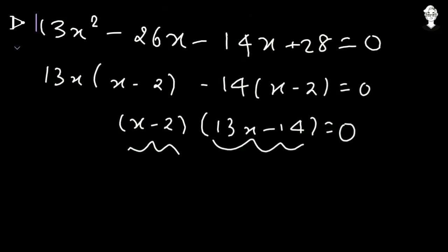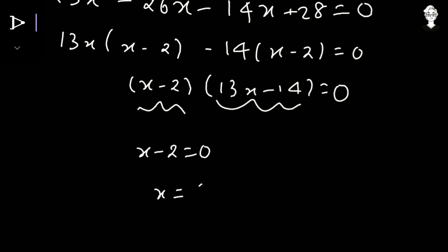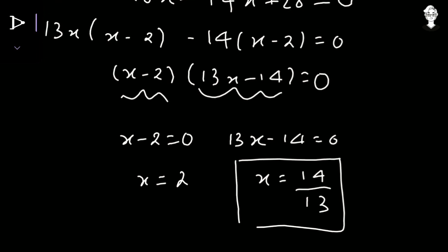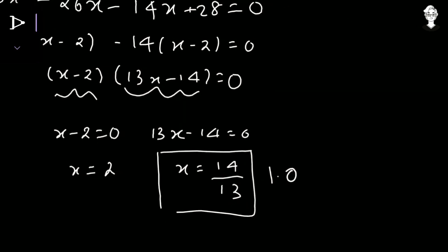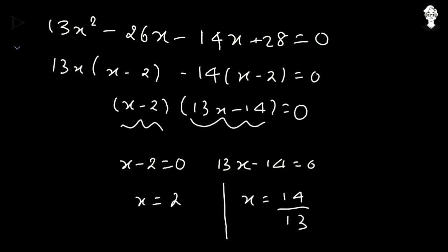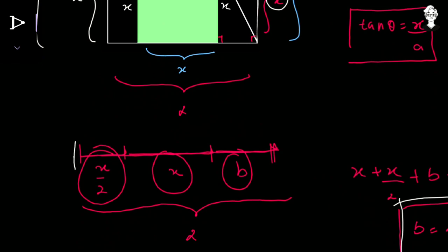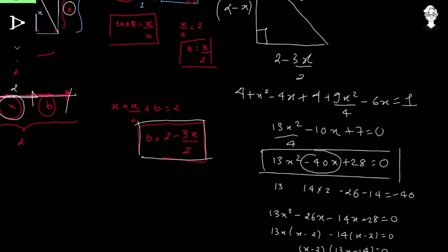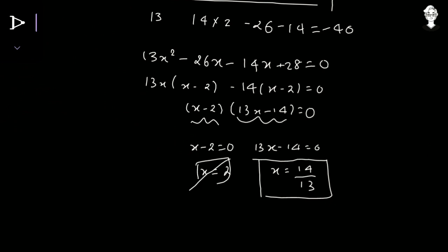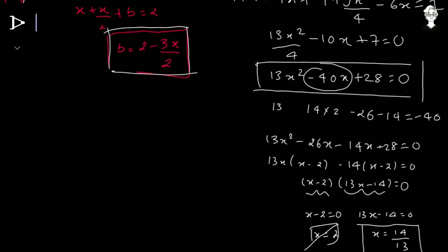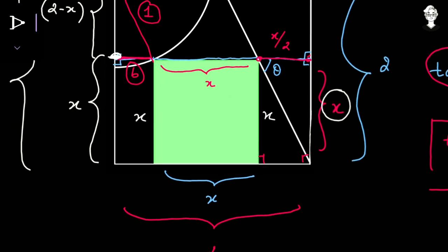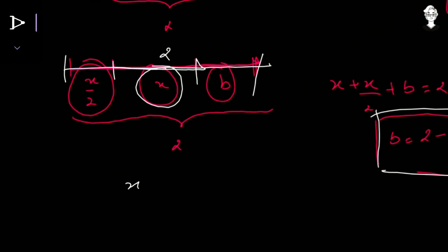Either x minus 2 equals 0, giving x equals 2, or 13x minus 14 equals 0, giving x equals 14/13. Now, 14/13 is approximately 1.07. Since x is a segment on the biggest line of length 2, x cannot equal 2 — it must be smaller than 2. So x equals 2 is rejected and x equals 14/13 is the correct answer.